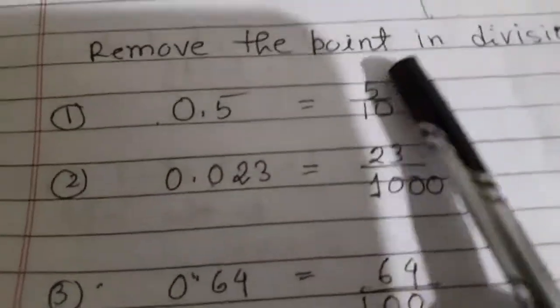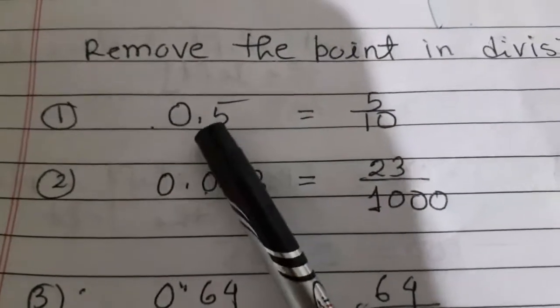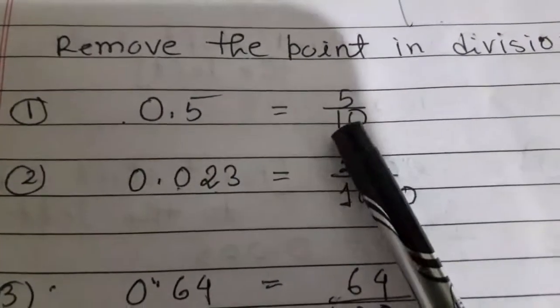0.5. Now, here after the point, how many digits? One digit. Therefore we put here one ten.